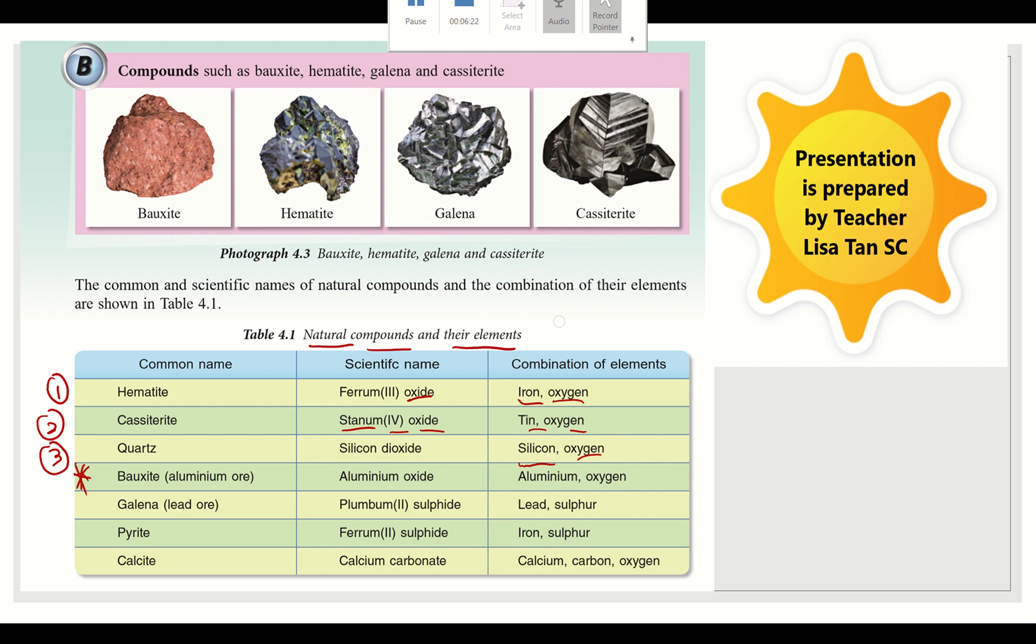Bauxite, very important. You have to memorize. Aluminium ore. Scientific name, aluminium oxide. Aluminium and oxygen elements.